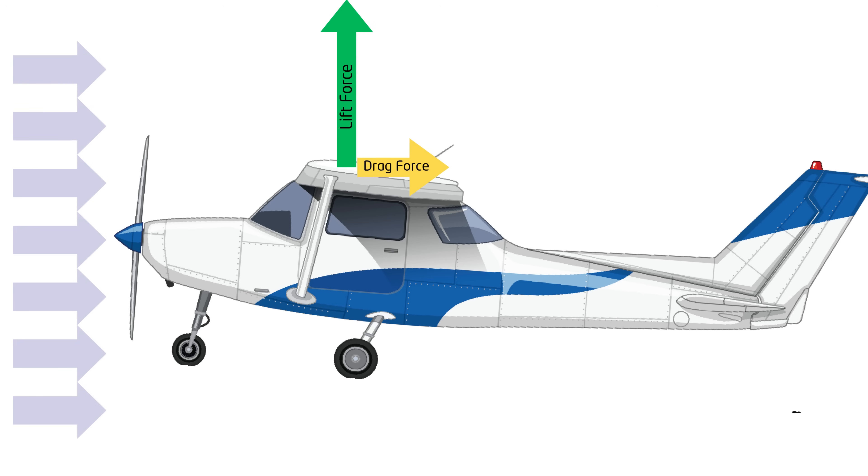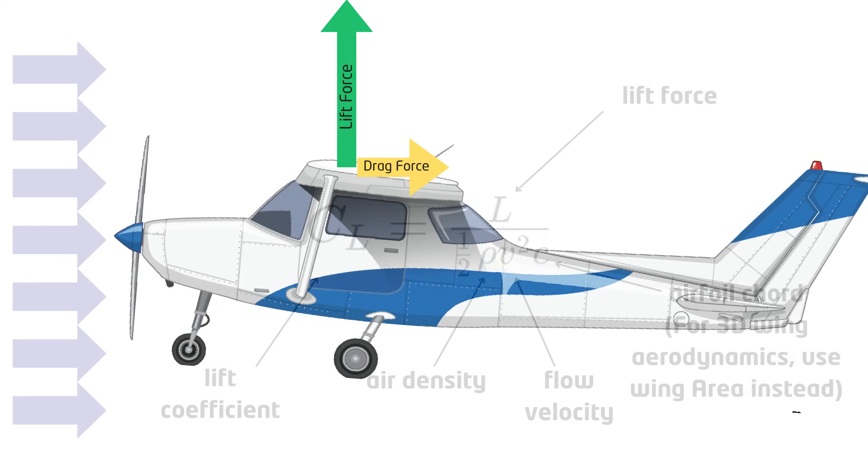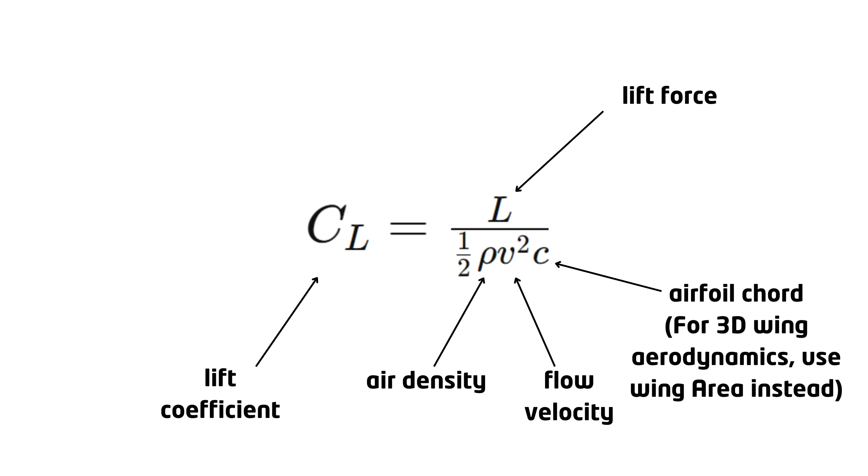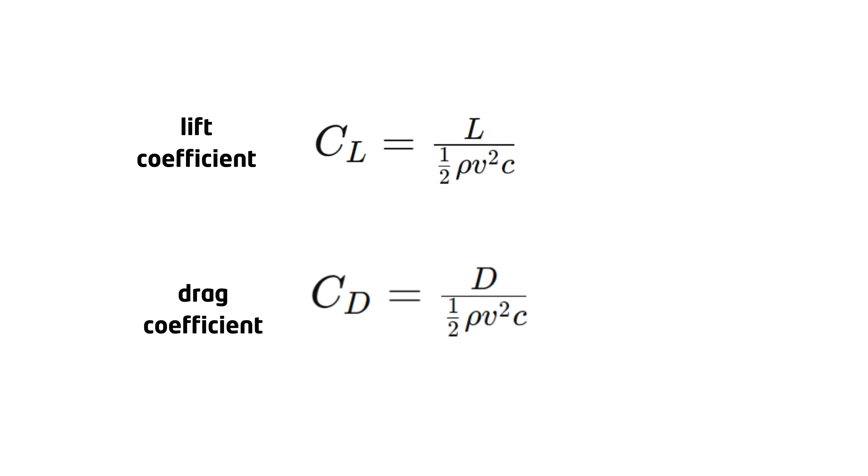In aerodynamics, you don't usually deal with the lift and drag forces themselves, but with lift and drag coefficients. By dividing the lift force by one half, times the air density, times the flow velocity squared, times the airfoil chord, you turn the lift into a dimensionless value, called the lift coefficient. Since we are dividing by velocity and size, the lift coefficient captures the aerodynamic lift characteristics of the shape, regardless of its size, or the speed of the flow it is in, making it a more general and useful measure than the lift force itself.